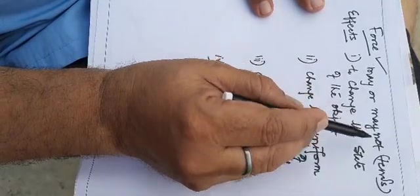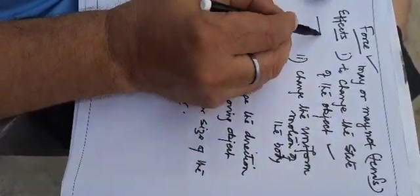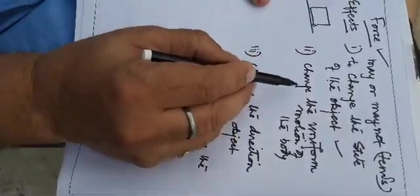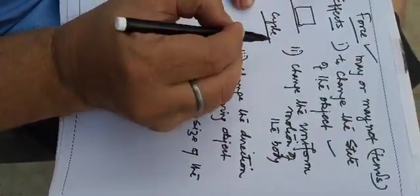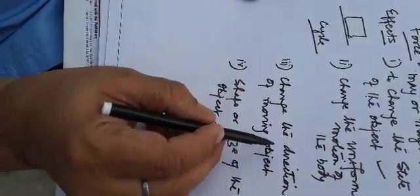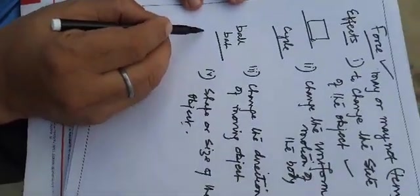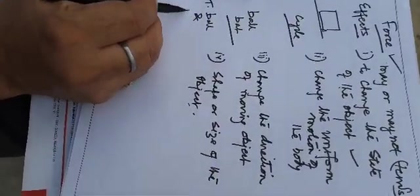So we have discussed force, which is an external agency that may or may not — or tends to — change the state of the object, as shown by the cube; change the uniform motion of the body, shown using a moving cycle; change the direction of the moving object, like the ball and bat; and change the shape and size of the object, as shown by the tennis ball and rubber band.